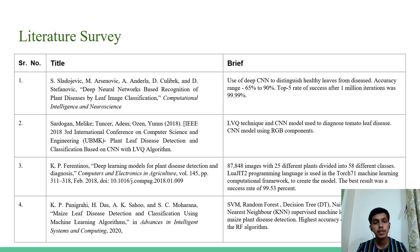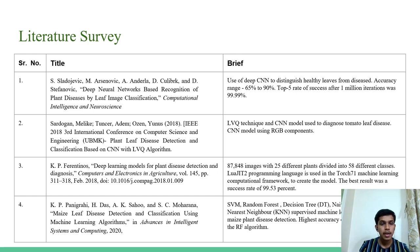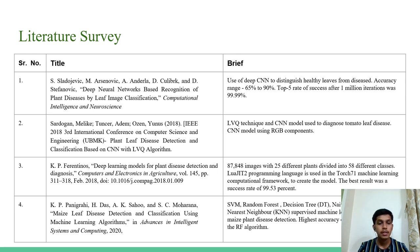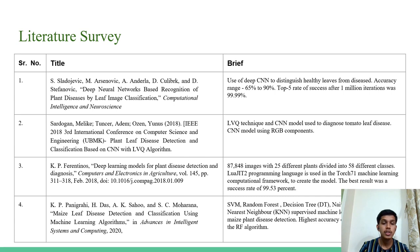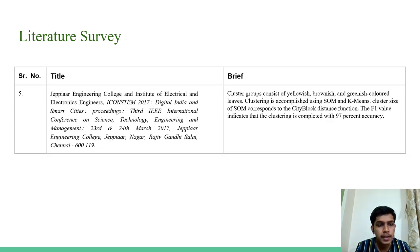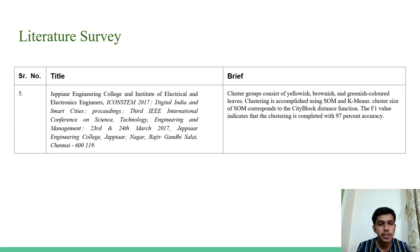The title of the first paper is Deep Neural Networks Based Recognition of Plant Diseases by Leaf Image Classification. The second paper is Plant Leaf Disease Detection and Classification based on CNN and LVQ algorithm. The third paper is Deep Learning Model for Plant Disease Detection and Diagnosis. The fourth paper is Maize Leaf Disease Detection and Classification using machine learning algorithms. The fifth paper was published by JPR Engineering College and Institute of Electrical and Electronics Engineering.